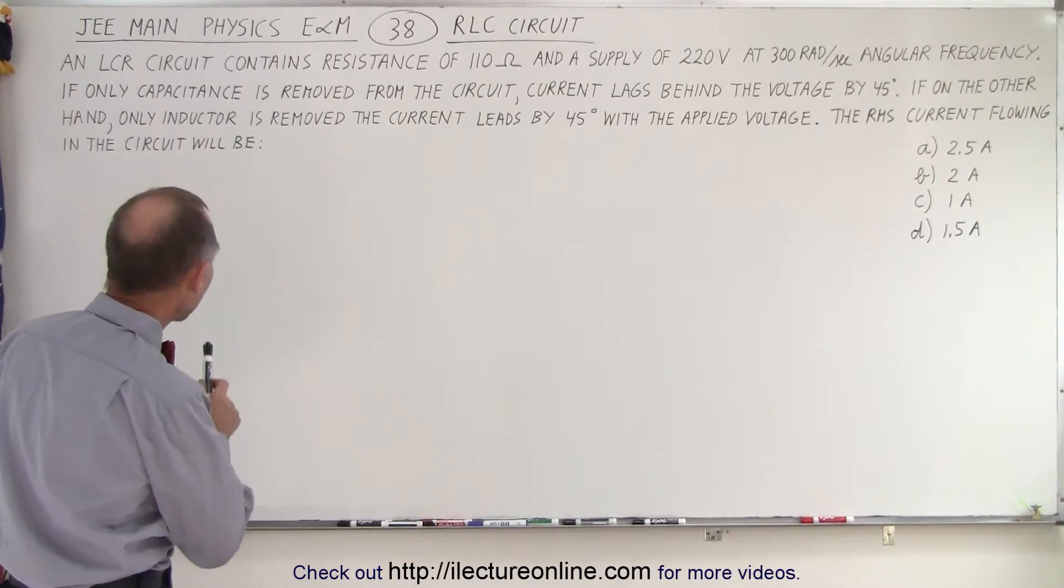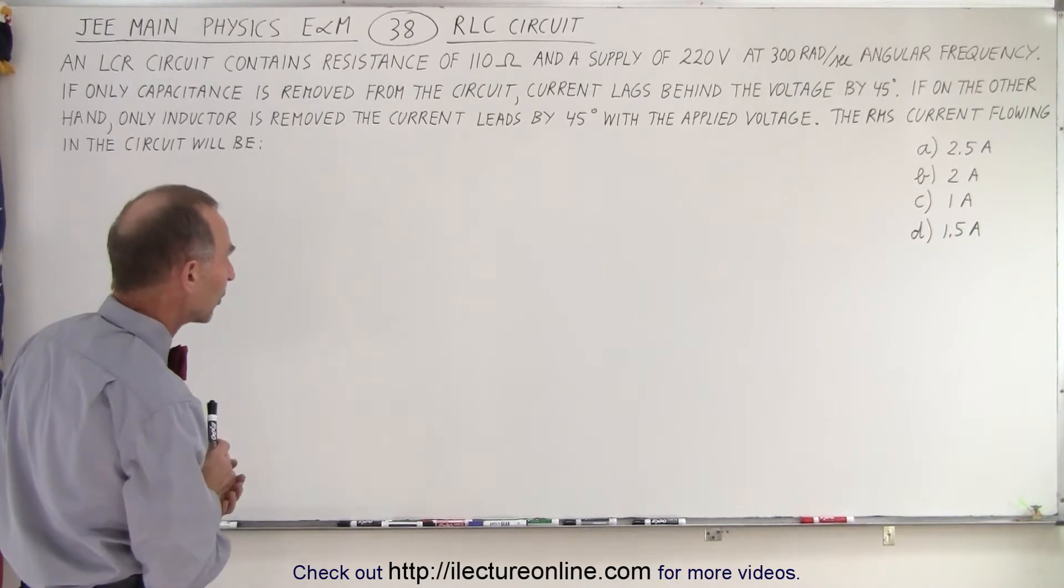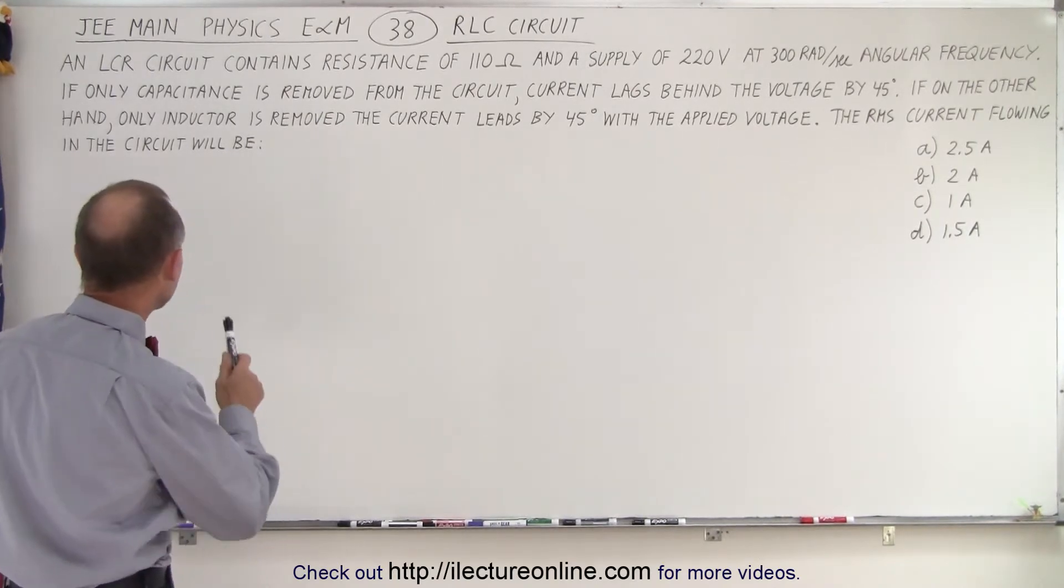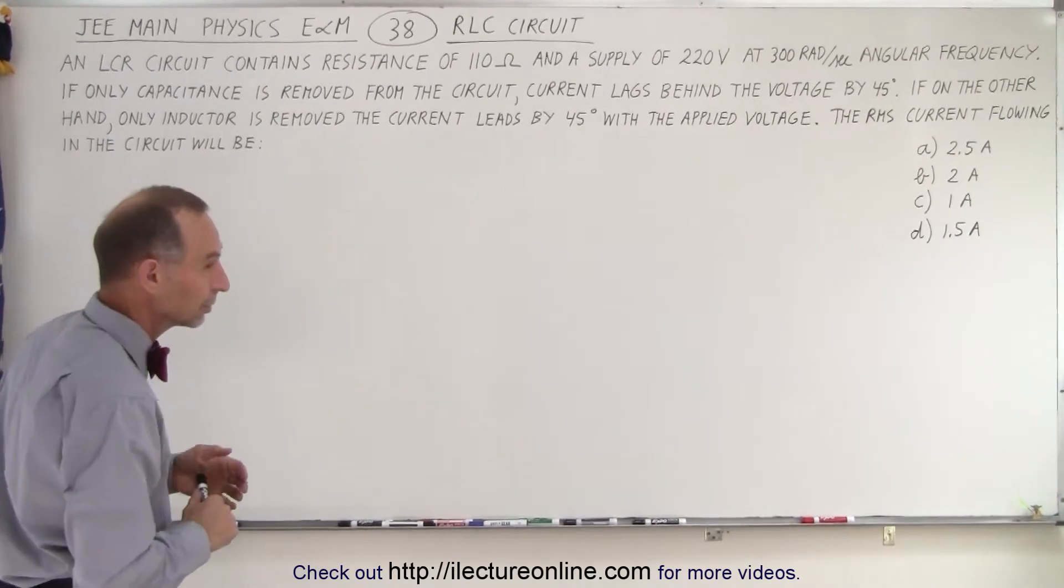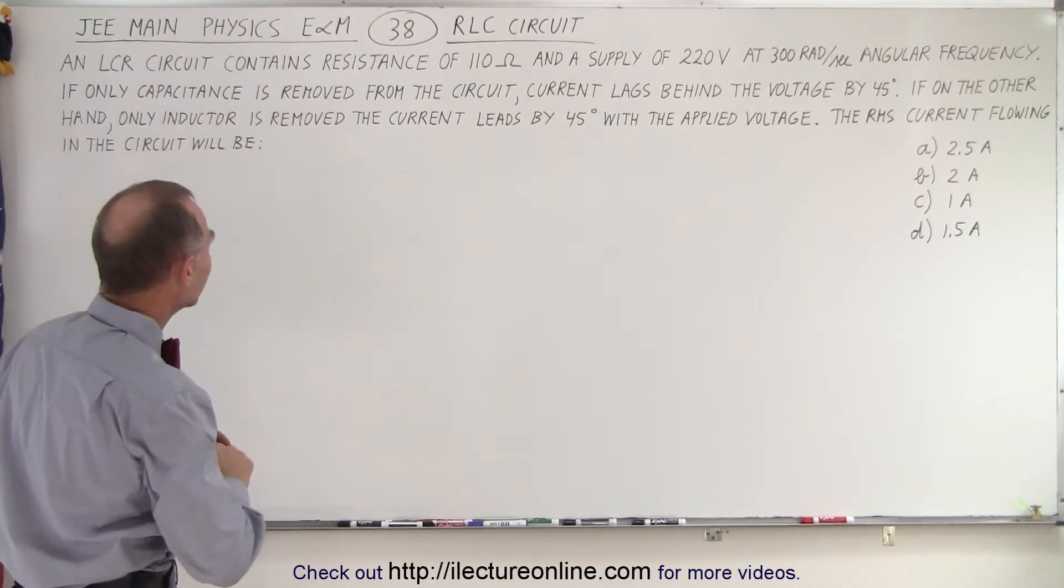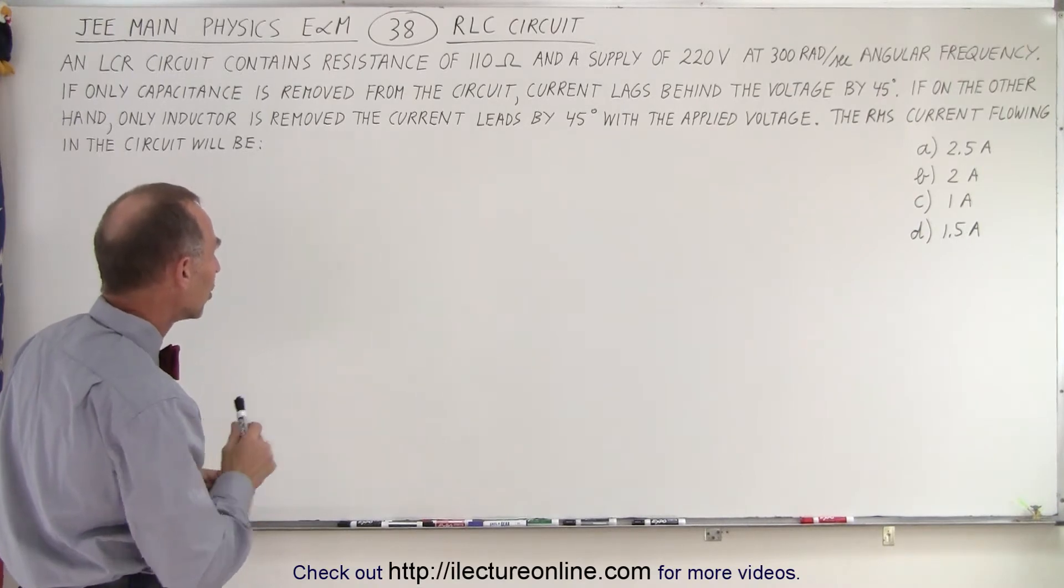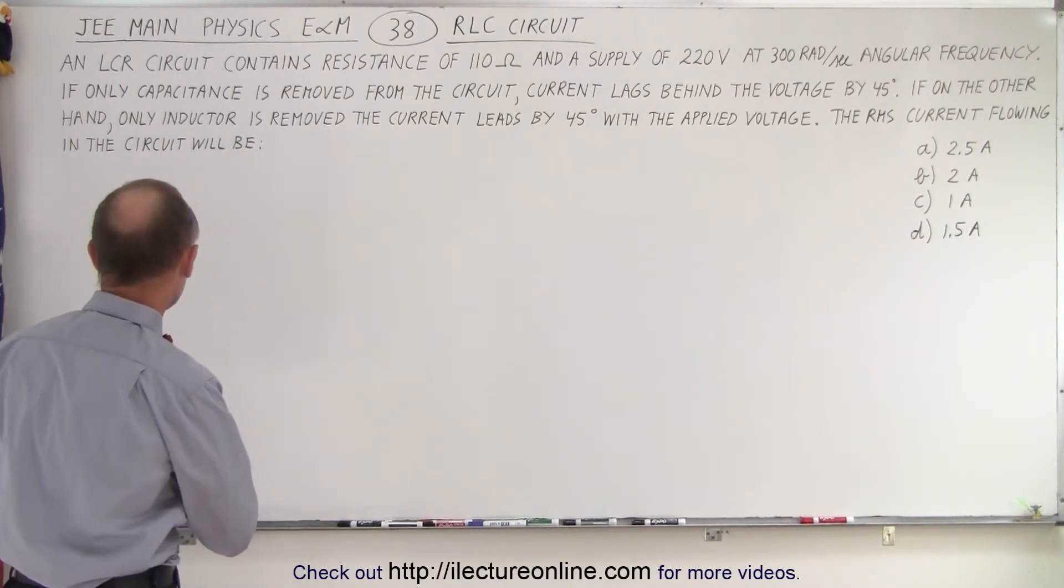If only capacitance is removed from the circuit, current lags behind the voltage by 45 degrees. If on the other hand only the inductor is removed, the current leads by 45 degrees with the applied voltage. The RMS current flowing in the circuit will be.